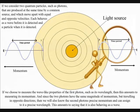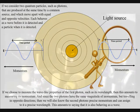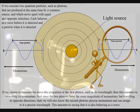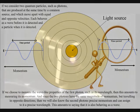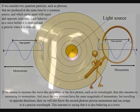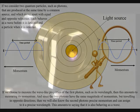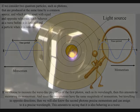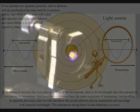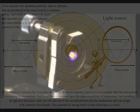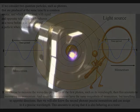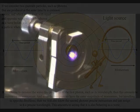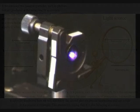If we choose to measure the wave-like property of the first photon such as its wavelength, then this amounts to measuring its momentum. Since the two photons have the same magnitude of momentum but traveling in opposite directions, then we will also know the second photon's precise momentum and can assign to it a precise wavelength. This amounts to saying that it is also behaving as a wave.